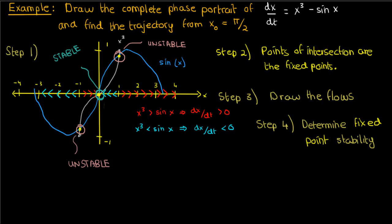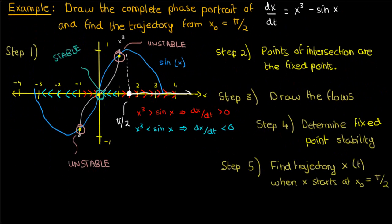And we're almost done. We still have step 5 left, in which we find the trajectory of x(t) starting from an initial point, x₀ equals π/2. That's fairly simple. You can start at π/2 and notice that the flows move to the right, so the trajectory is just going to follow the flow. And the trajectory here is going to keep going all the way to infinity because there isn't a nearby stable fixed point. So it certainly isn't going to follow a stable path.